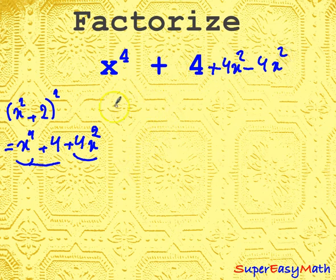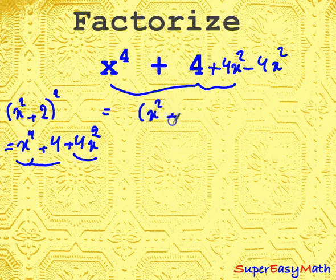Now we will have x^4 + 4 + 4x^2, which equals (x^2 + 2)^2.